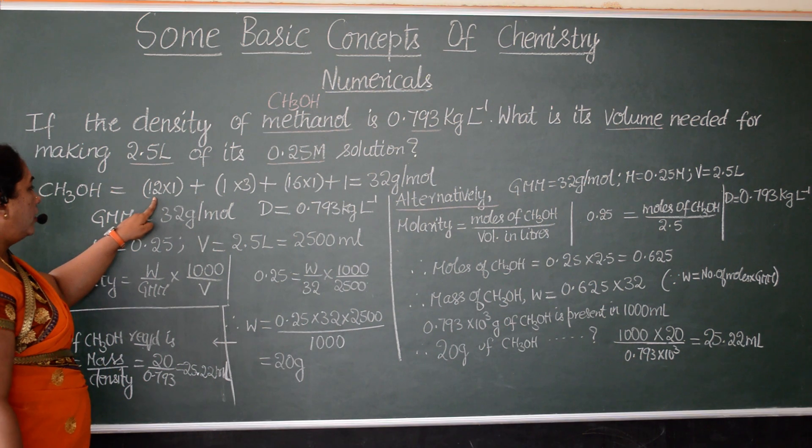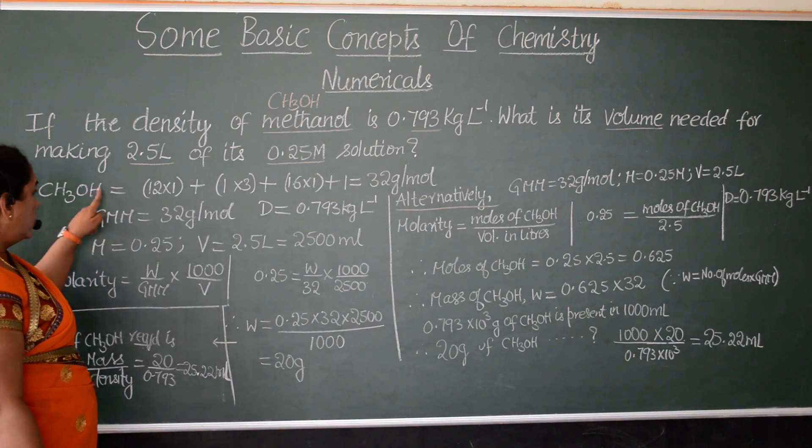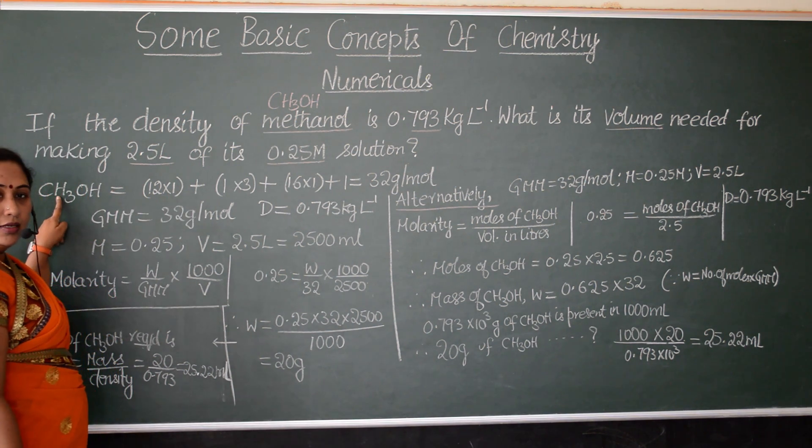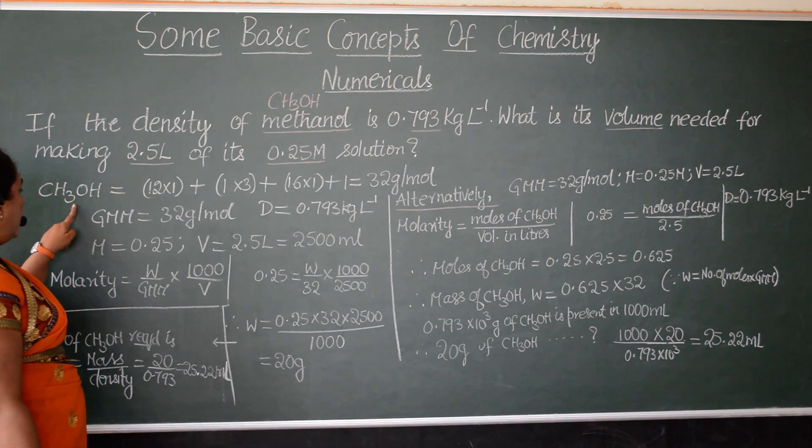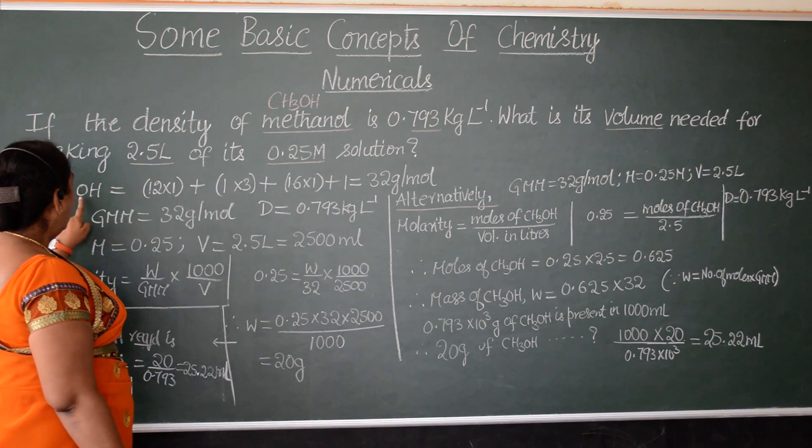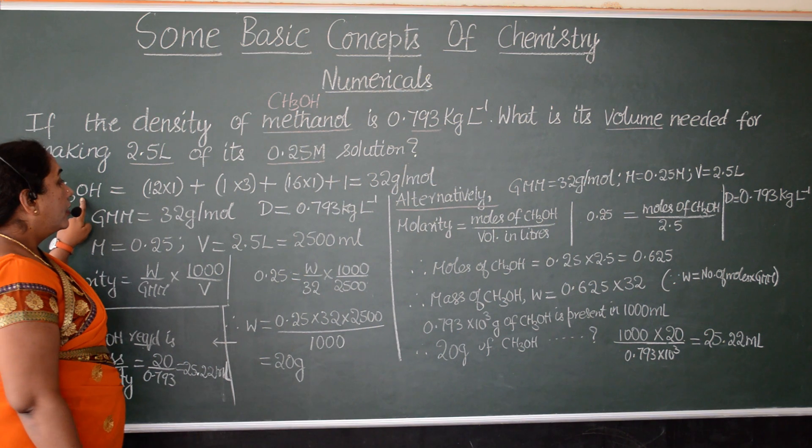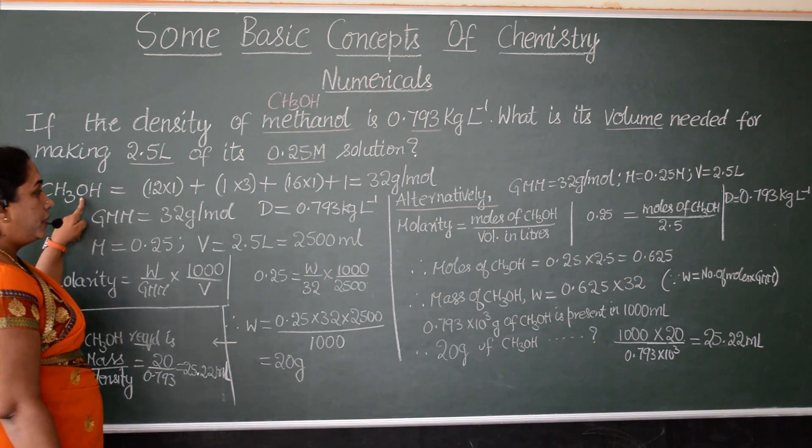CH3OH. Carbon molecular mass 12. Like that, only one carbon atom is there. So, 12 into 1 plus hydrogen. Mass is 1, 1 into 3 because 3 of such atoms of hydrogen are present. Plus mass of oxygen is 16. So, therefore, one such oxygen atom is present, 16 into 1.